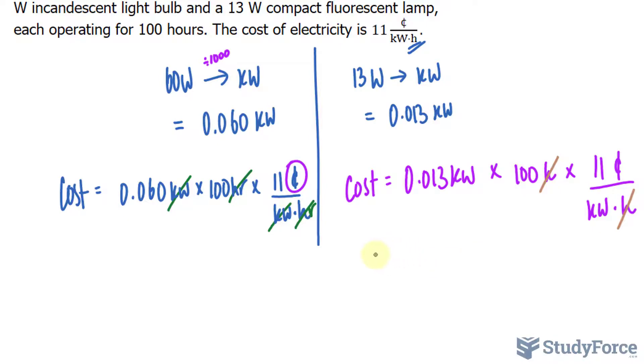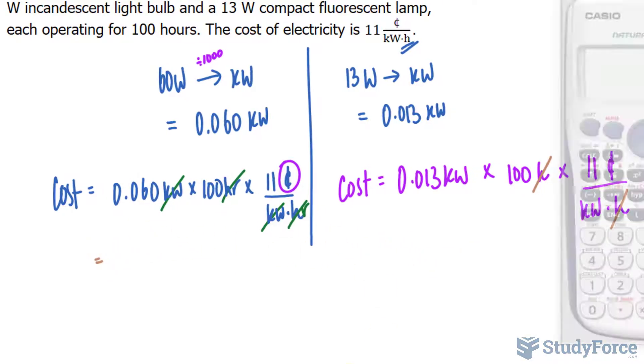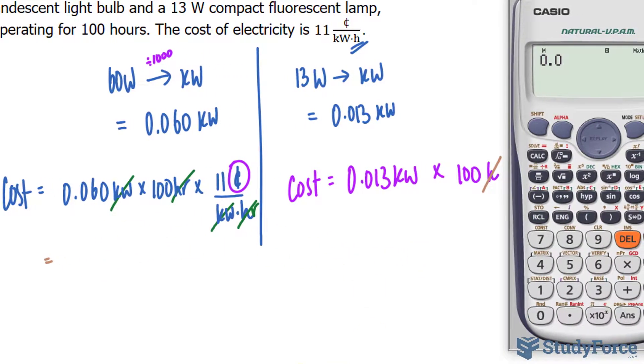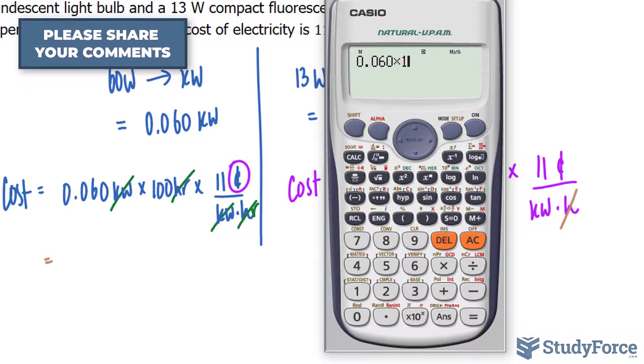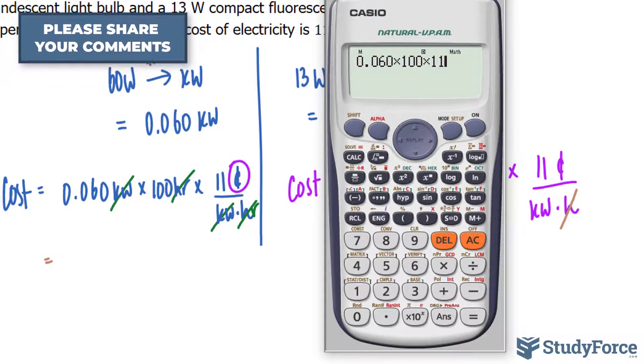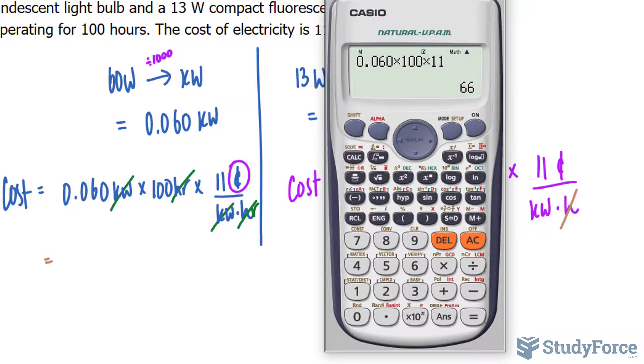That unit and that unit cancel out. And all we have to do now is use our calculator. 0.060 times 100 times 11, and that makes 66 cents.